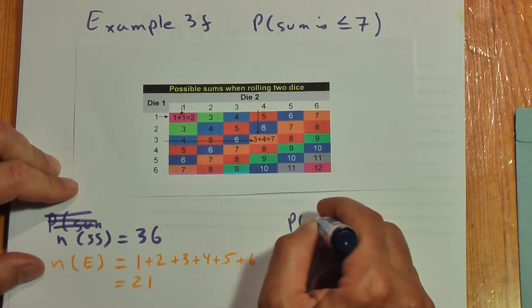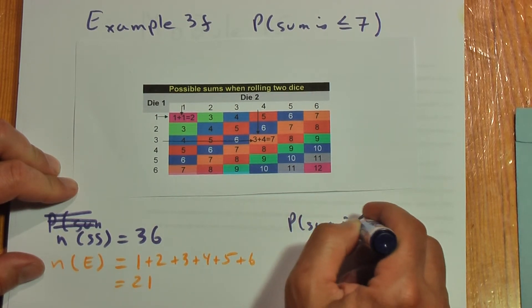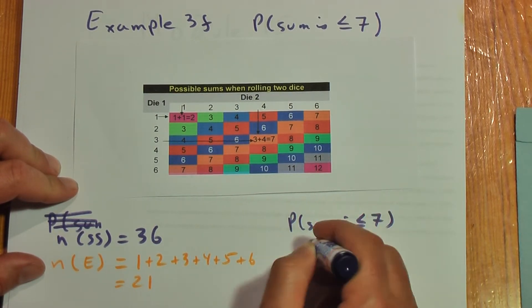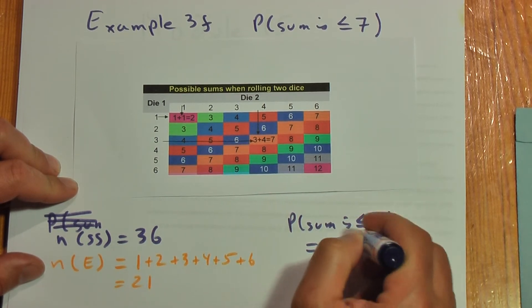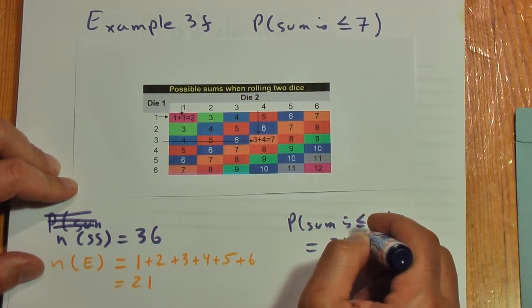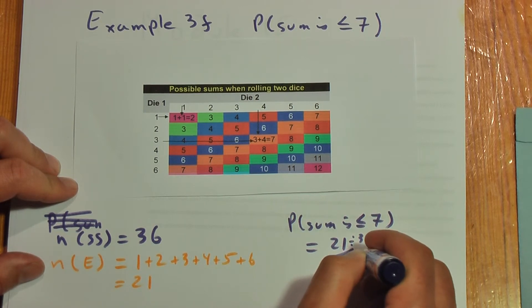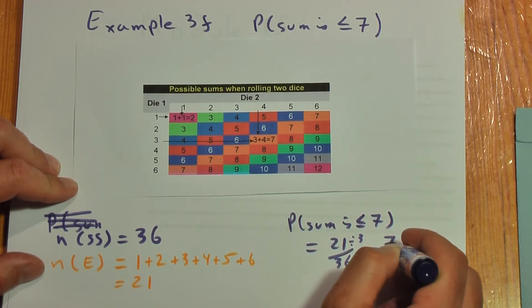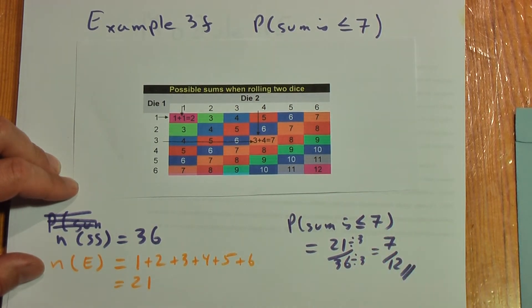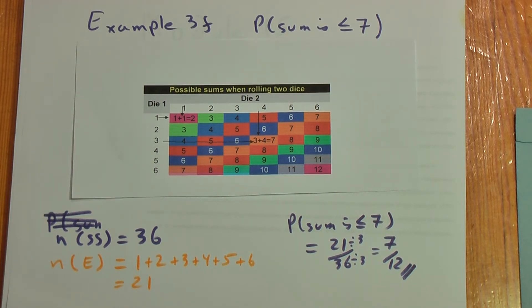The probability that the sum is less than or equal to 7 equals 21 over 36, which, as you saw earlier, is 7 out of 12, just above 50%.